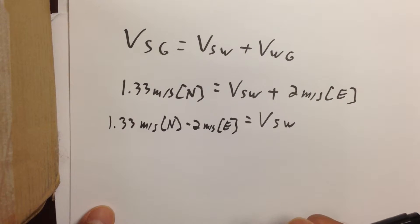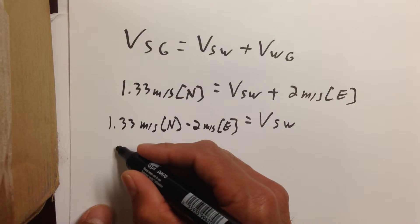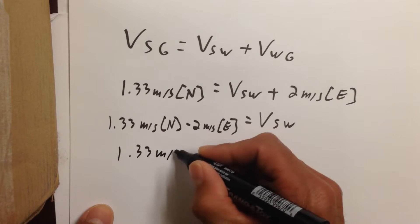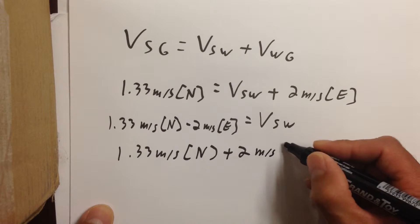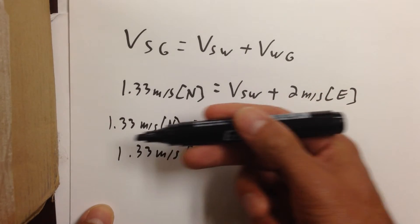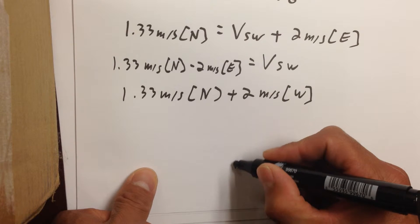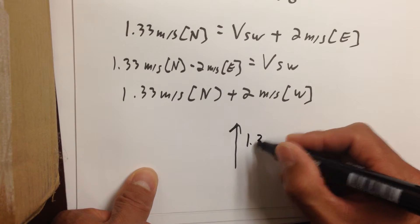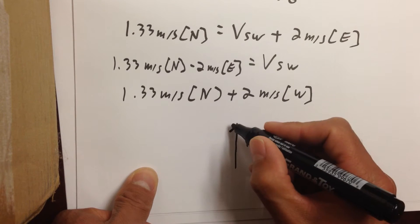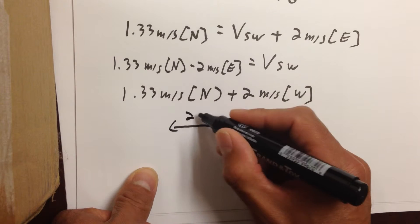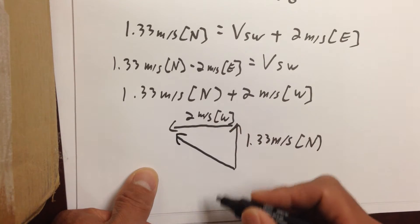Let's say we didn't know how to subtract vectors, but we do know how to add them. To subtract a vector, I'm going to add the opposite vector. So I need 1.33 meters per second north plus 2 meters per second west. Adding a vector west is the same as subtracting a vector east. So I'm going to draw a picture: 1.33 meters per second north, and add to that 2 meters per second west.